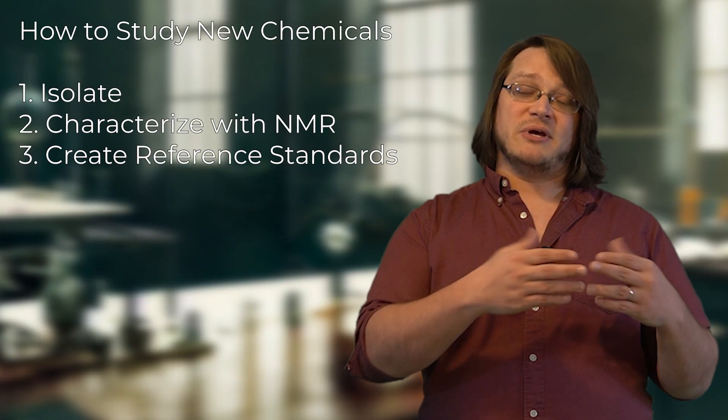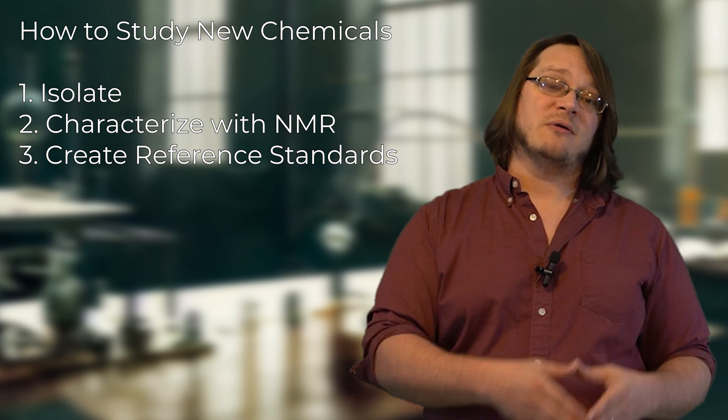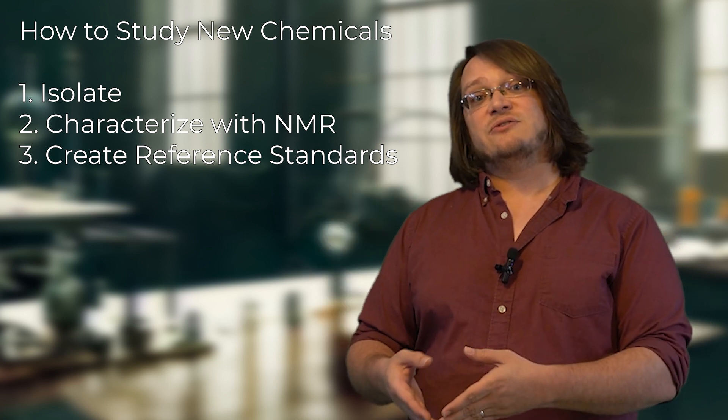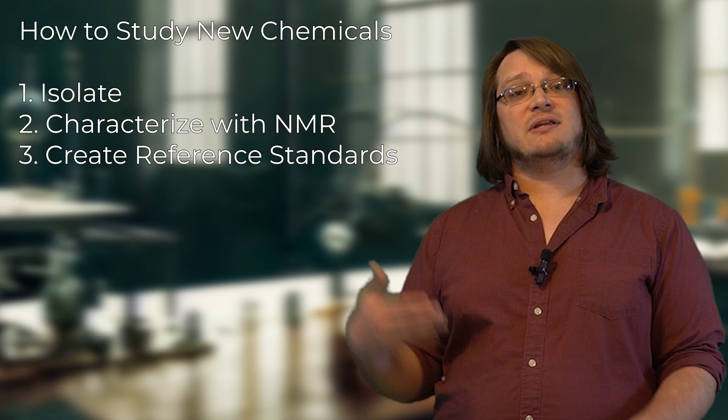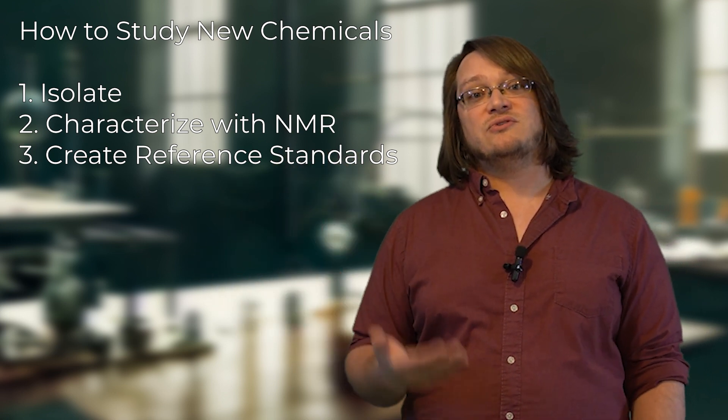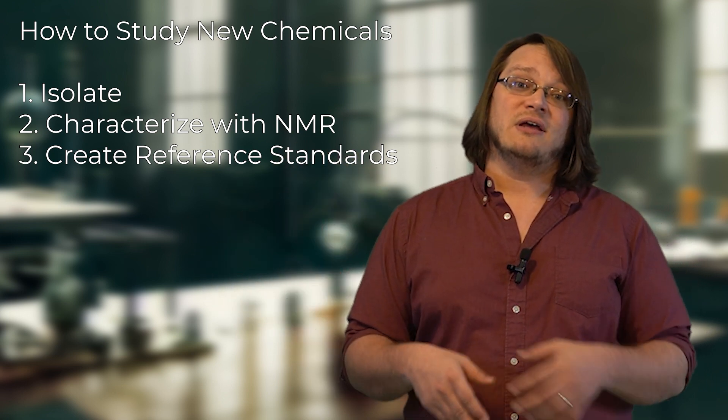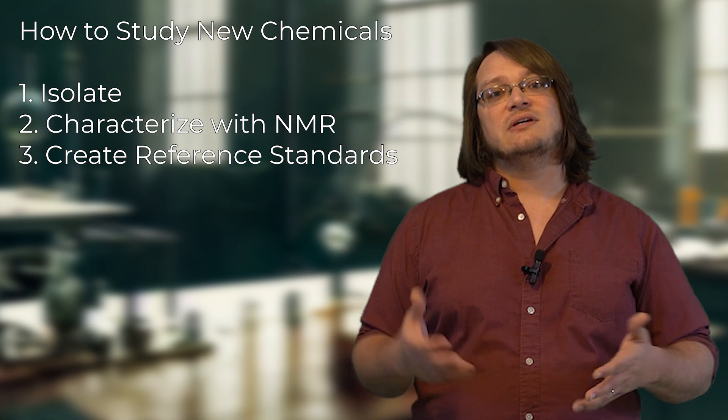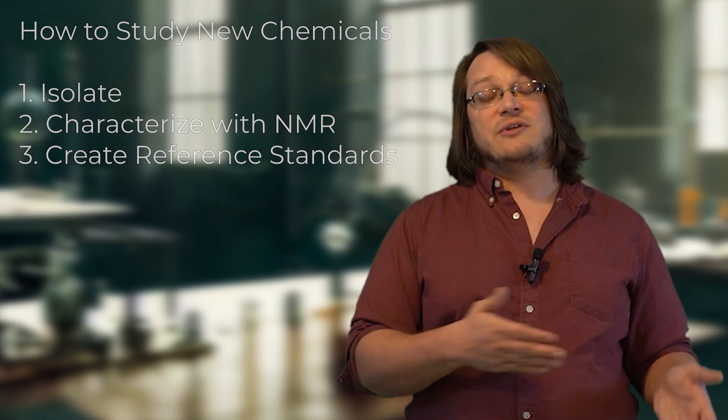This is usually the first step of identifying something that has never been identified before. Once a compound has been identified using NMR, there are usually reference standards that are then made of that chemical, and then researchers can study that chemical using things like gas chromatography and other chromatography techniques to look for that compound in other things.